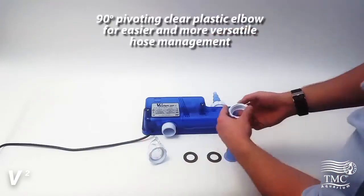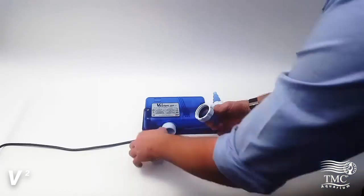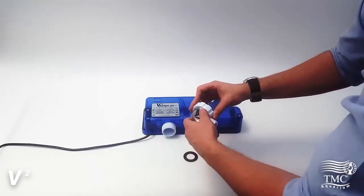The included clear elbow allows for easier and more versatile hose management. This will allow your pipe to come in at various different angles if you need it to.